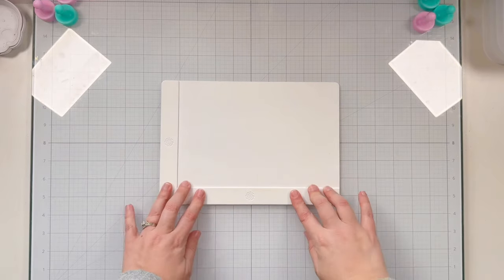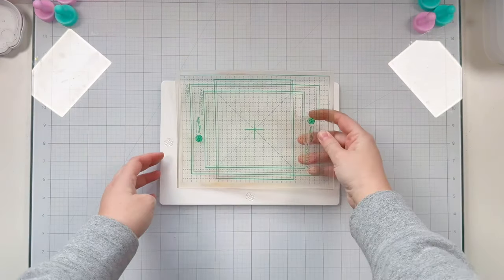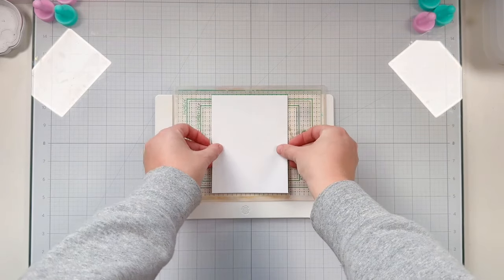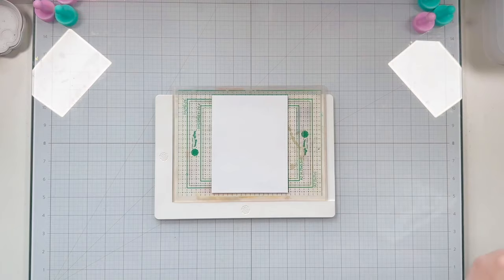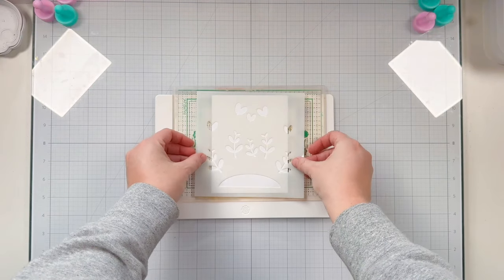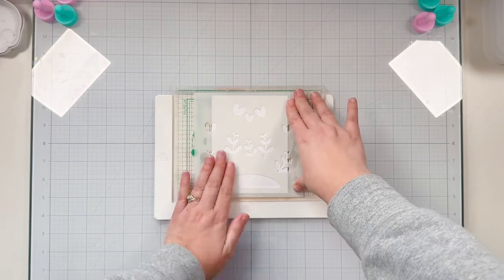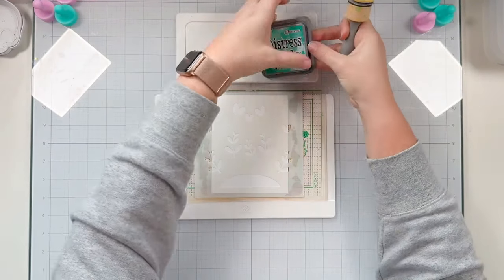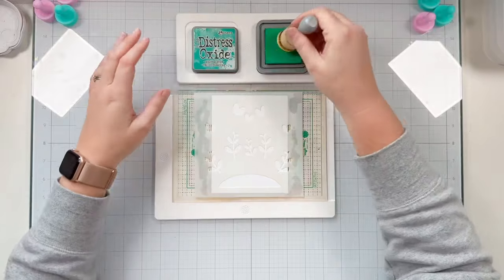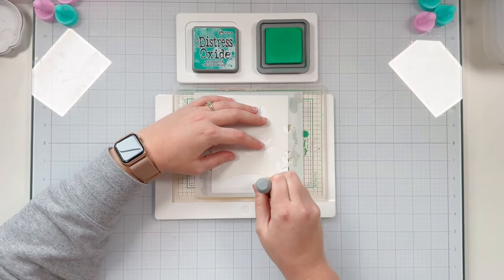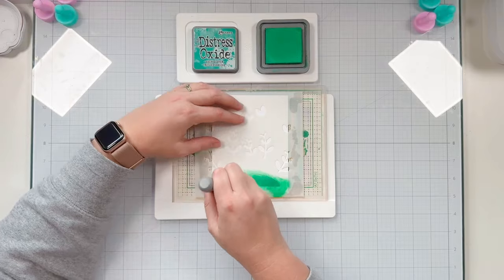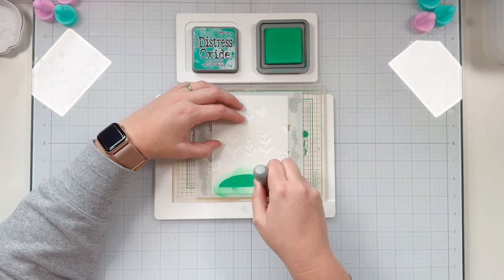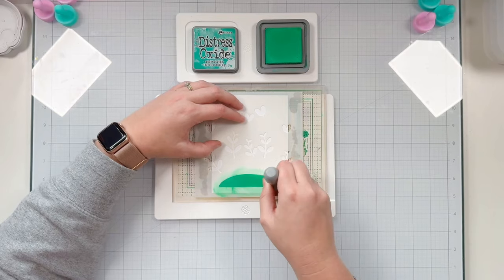I'm going to be using some of the newer Lawn Fawn goodies today, different Valentine's themed products. So let's start with stenciling. I'm using the Lawn Fawn Heart Garden stencil with my Waffle Flower Grip Mat and stenciling tools. I'm using Distress Oxides with my domed foam blenders, adding Lucky Clover into the hill of this stencil.